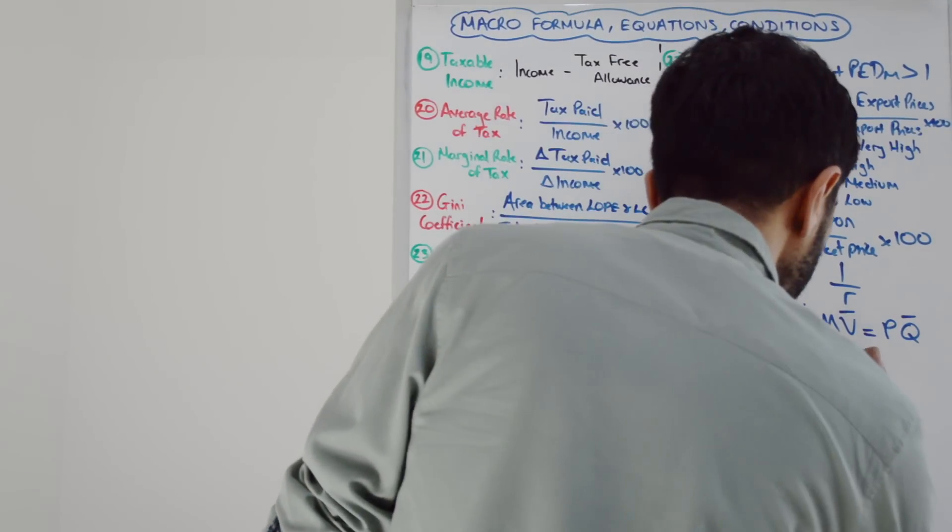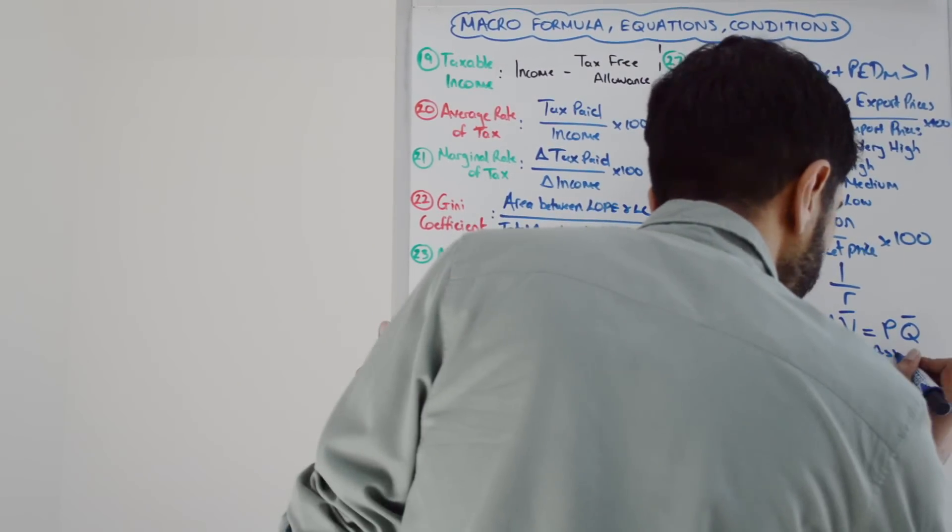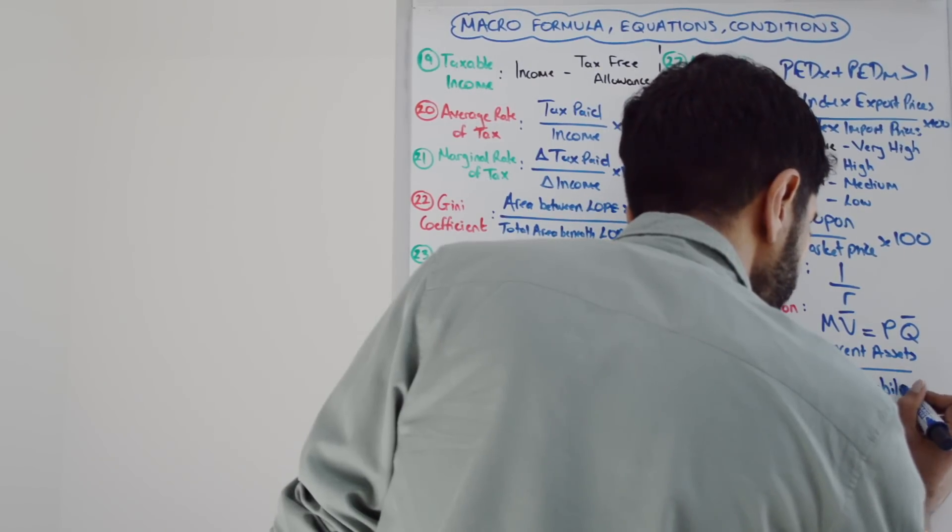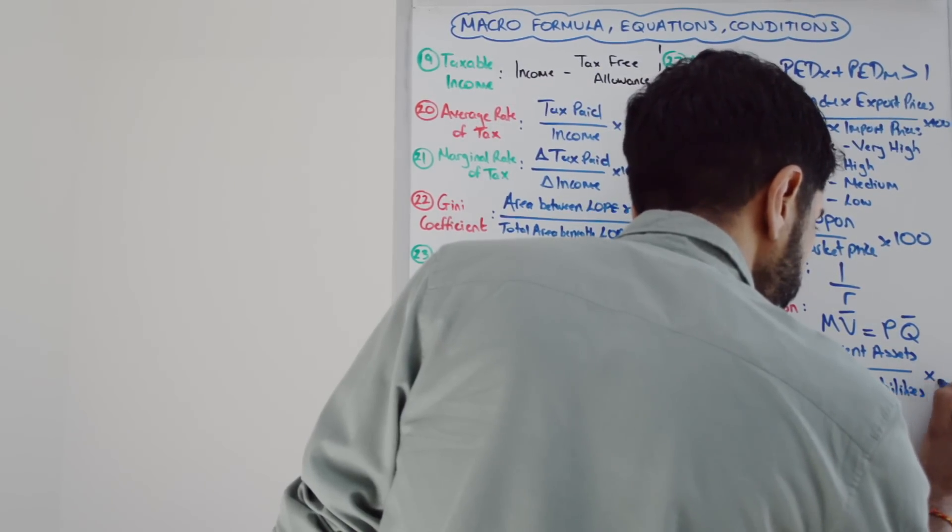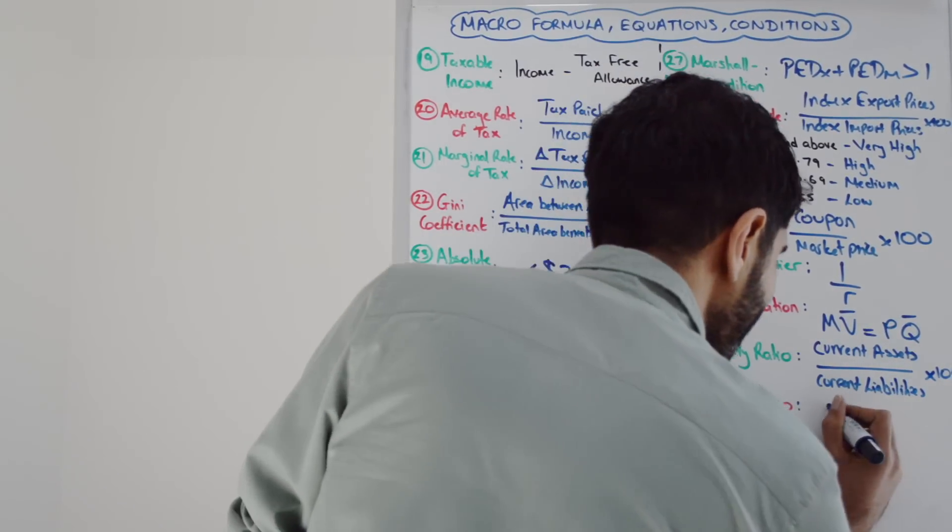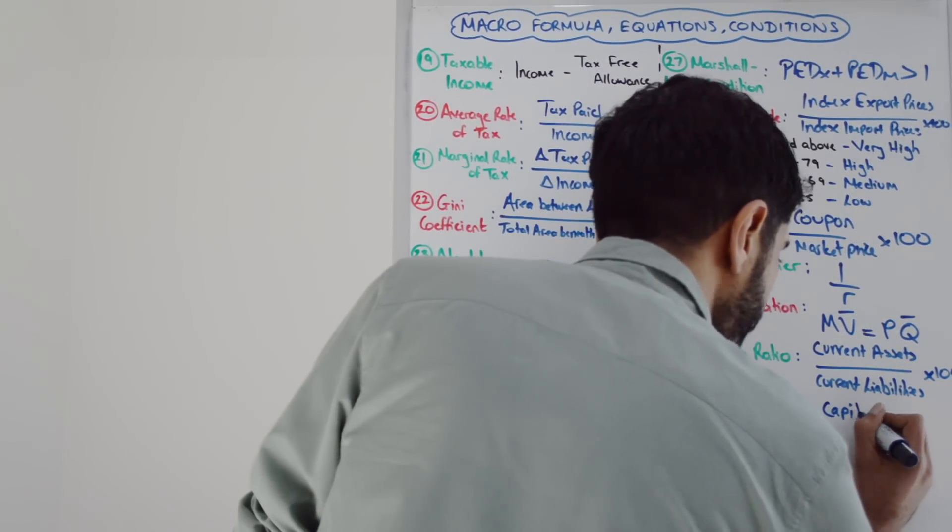Financial market ratios, useful when you're learning financial market regulation. Liquidity ratio is just current assets - short-run assets in the balance sheet - divided by current liabilities, which is short-run liabilities, times 100. The capital ratio: we're taking capital in the liabilities part of the balance sheet divided by loans times 100.